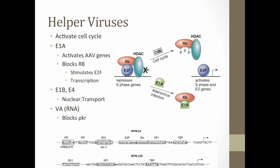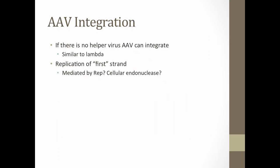E1A is what the helper viruses provide to stimulate the cell cycle. They also have proteins — E1B and E4 — that stimulate nuclear transport of the dependoviruses. The RNA from the VA gene blocks PKR. If there's no helper virus present — no adenovirus — AAV can potentially integrate into the genome. If AAV is unable to replicate its genome and move on because a cell isn't in S phase, there's potential for integration. The mechanism behind this isn't fully understood, but integration is likely mediated by the NS1 rep protein and probably cellular endonucleases as well.